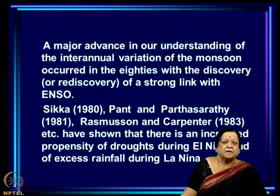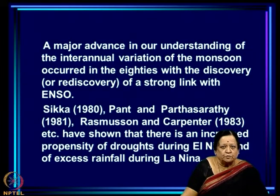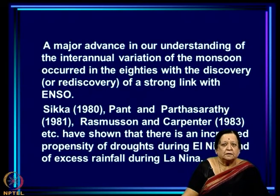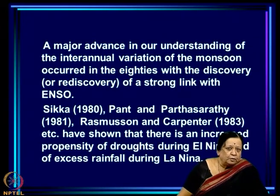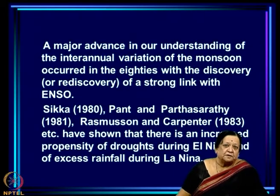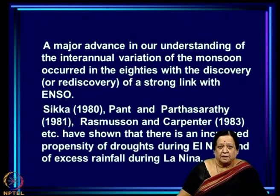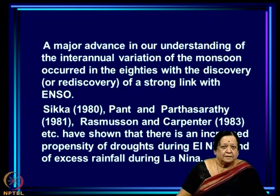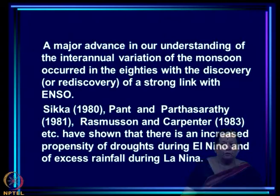A major advance in our understanding of the inter-annual variation of the monsoon occurred in the 1980s with the rediscovery of a strong link with the major phenomenon over the Pacific known as El Niño and Southern Oscillation, or ENSO. This came from work done in our own country — Sikka 1980, Pant and Parthasarathy 1981 — followed by Rasmusson and Carpenter from the US. They showed that there is an increased propensity of droughts during El Niño, the warm phase of ENSO, while the cold phase, La Niña, favors excess rainfall.